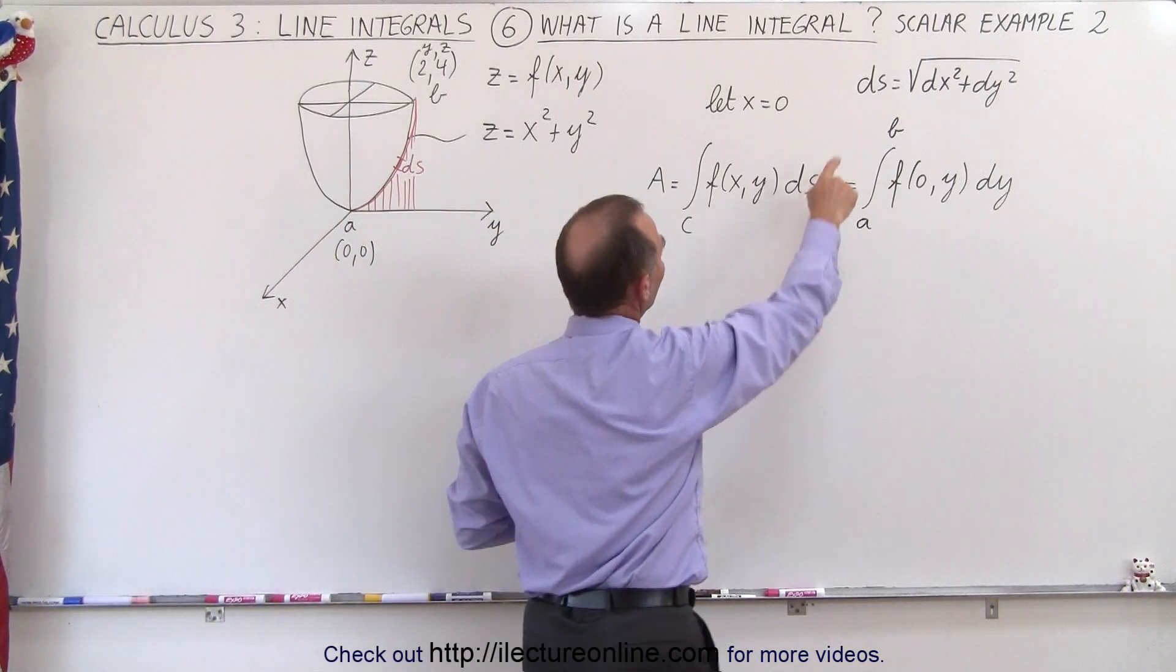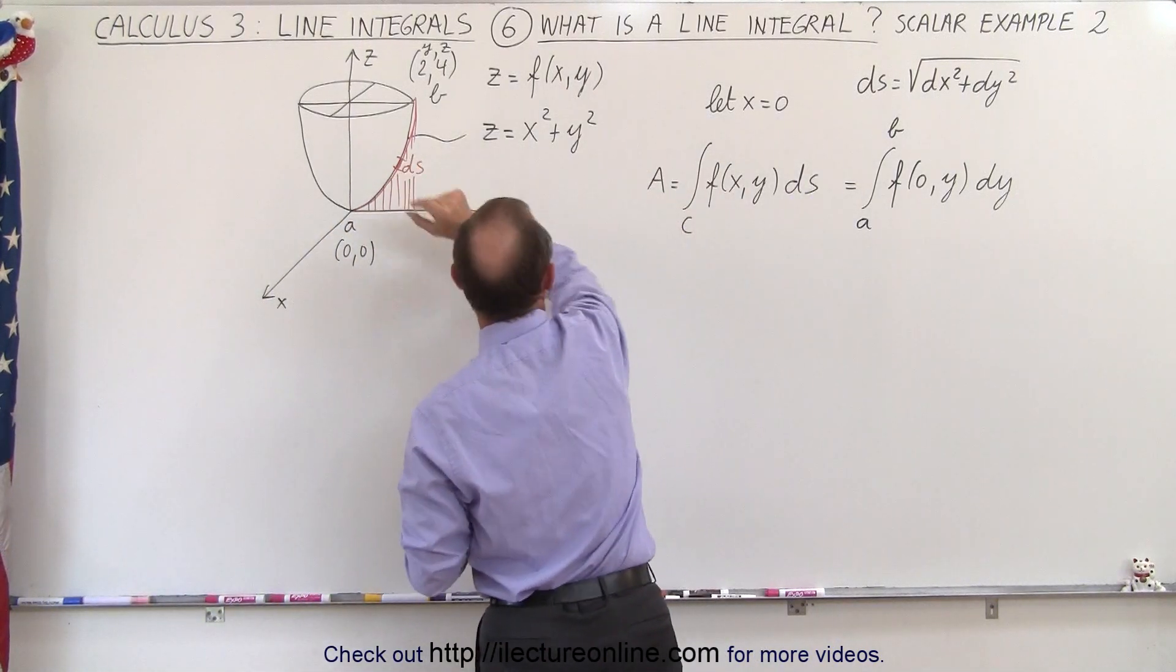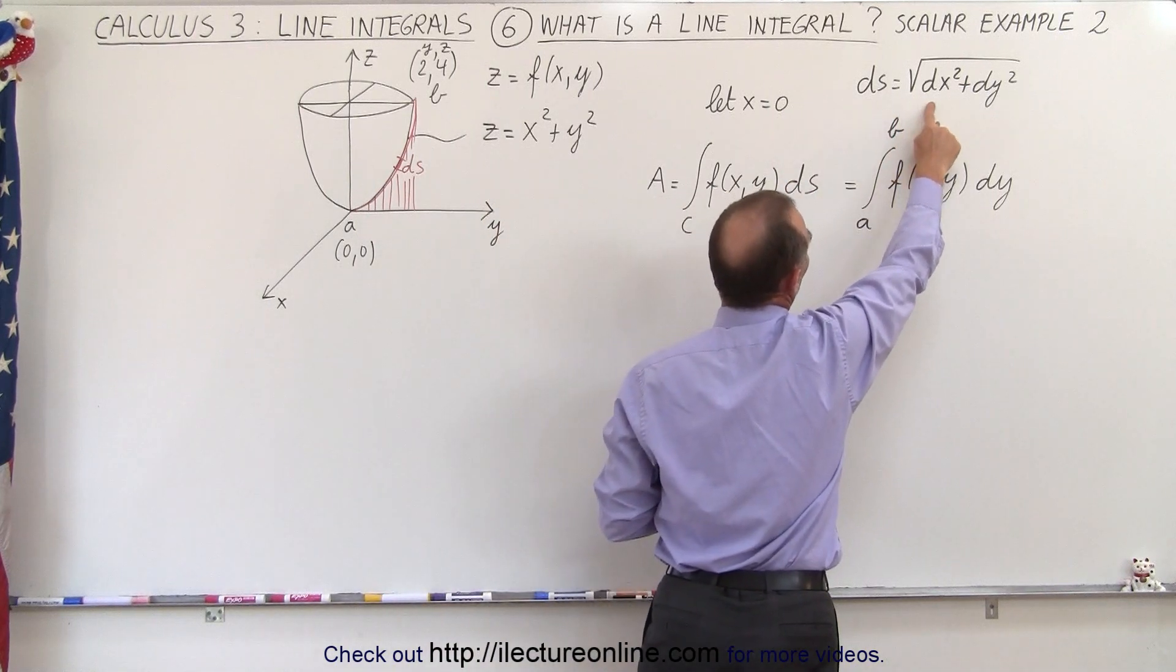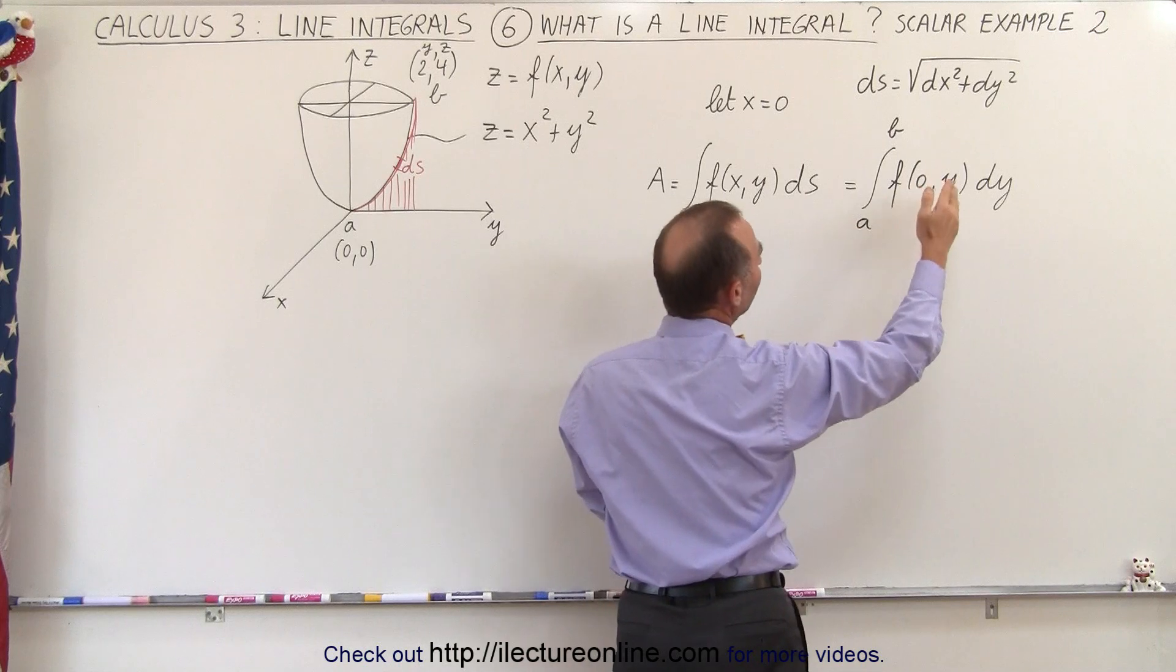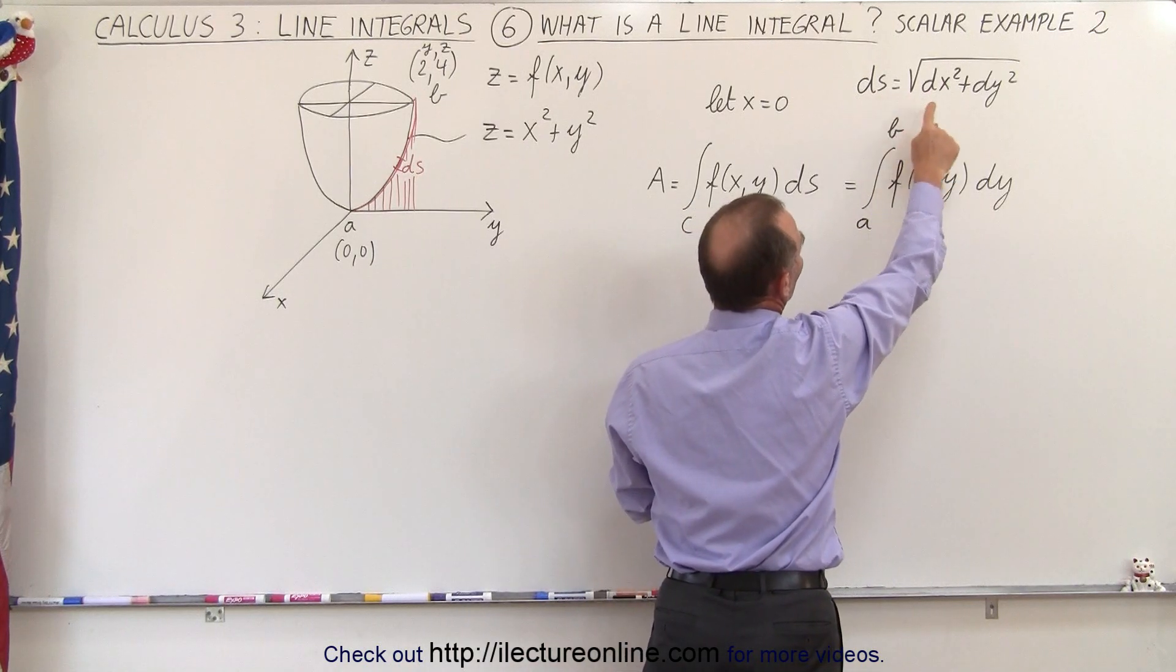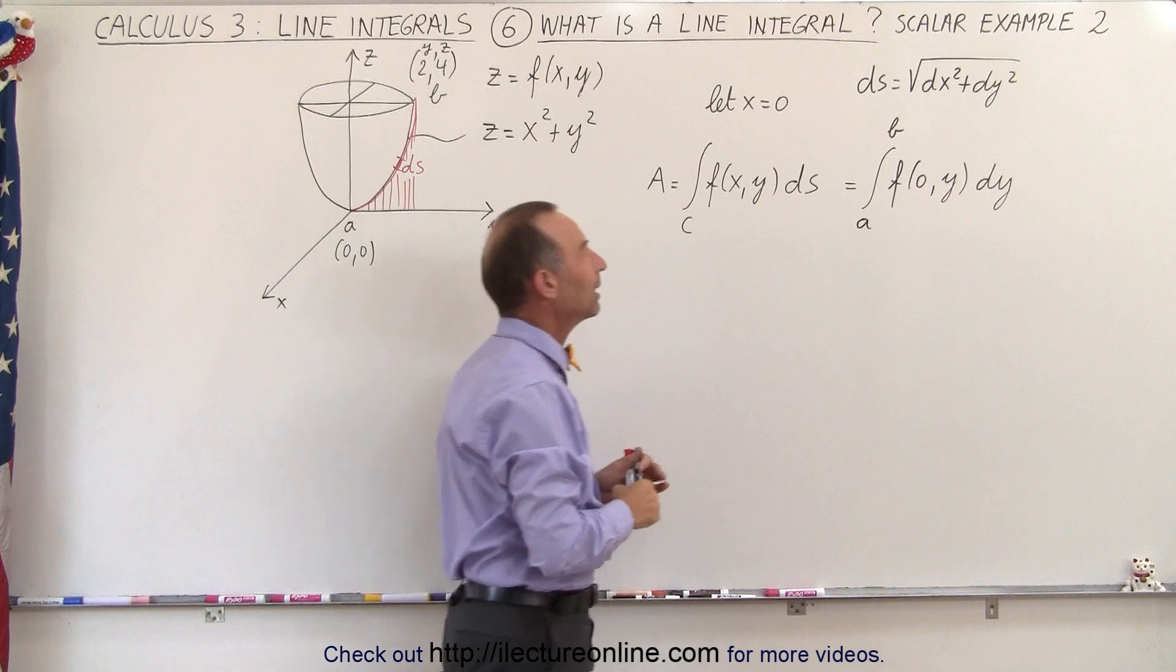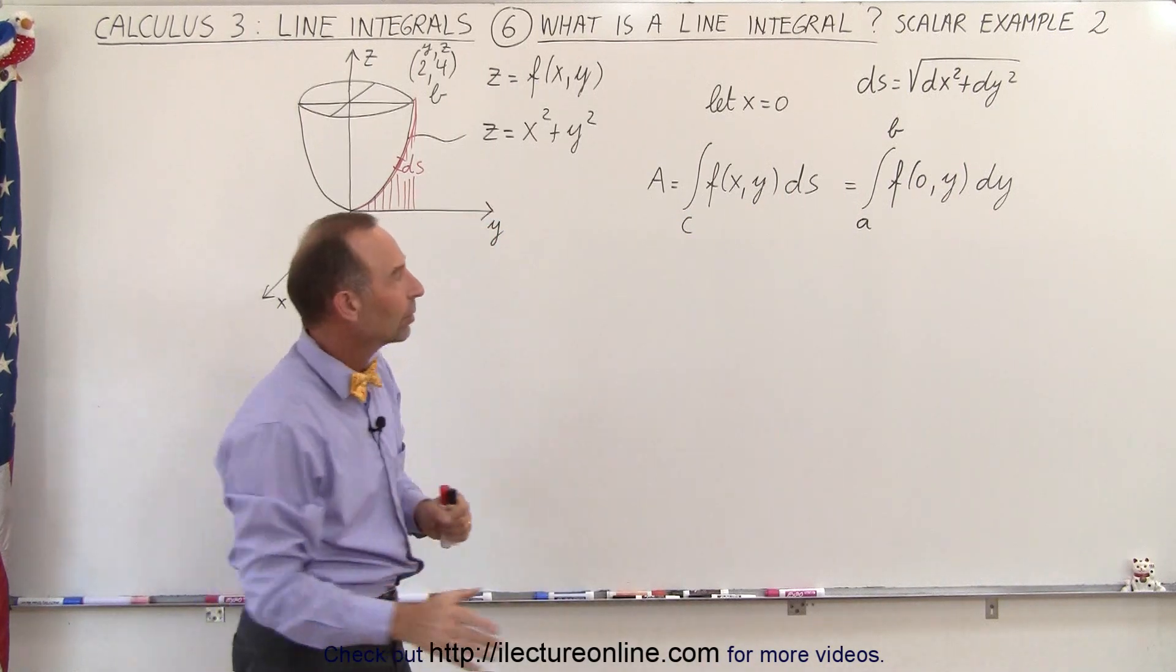In that case, we can say that ds, which is a small little line segment, which is normally equal to the square root of dx squared plus dy squared, can now simply be equal to dy because dx will be 0, so ds will be the square root of dy squared or simply dy.